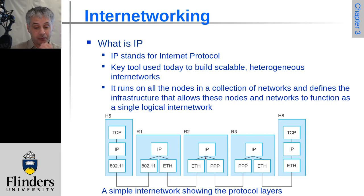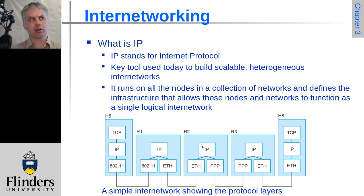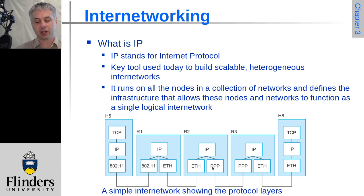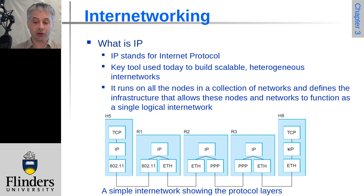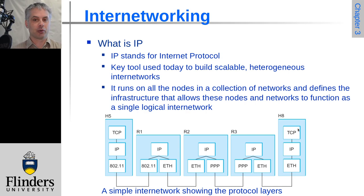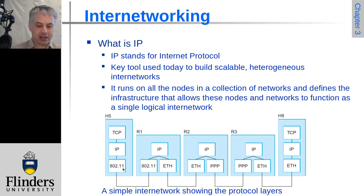The packet travels via Ethernet to router 2, which strips the Ethernet frame, examines the IP packet, and determines it must send it via a PPP link. It adds a PPP header and sends it to router 3. Router 3 decapsulates to the IP packet and re-encapsulates in an Ethernet frame onto the final Ethernet segment. Host 8 receives the Ethernet frame, strips it, finds the IP packet addressed to it, strips the IP header, and passes it up to TCP, which matches it to a connection and delivers it to the application.